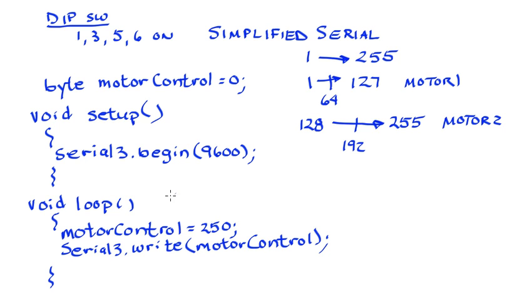If I wanted this motor moving at a relatively fast speed, maybe I put in here a 250, not quite full speed but pretty close. So now when I use my Serial3.write motor control, it's going to send a byte that has a value of 250. If I were to send a 150 instead, 150 is on this side, so I'd be controlling still motor two, but now it's going to be moving in the other direction.